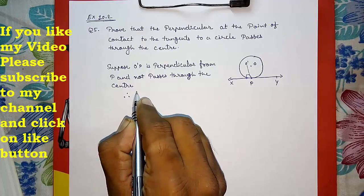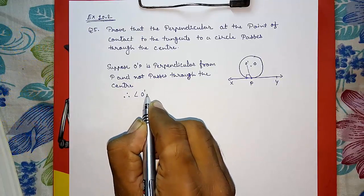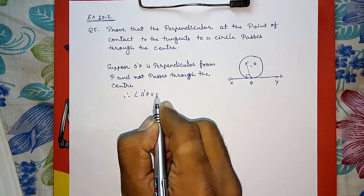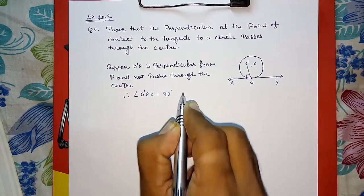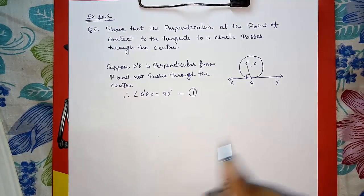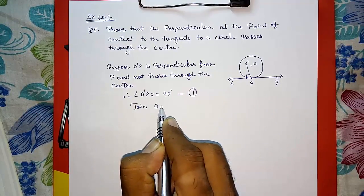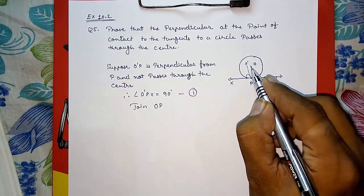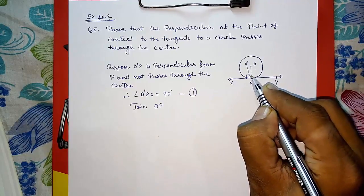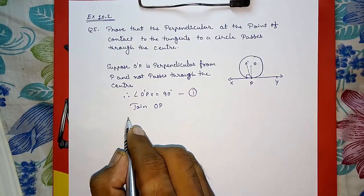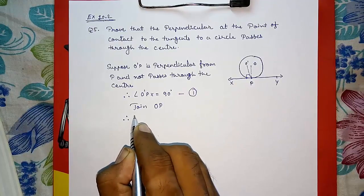Therefore, angle O dash P X is equal to 90 degrees. This is result number one. Now join O P, means this is the center point.